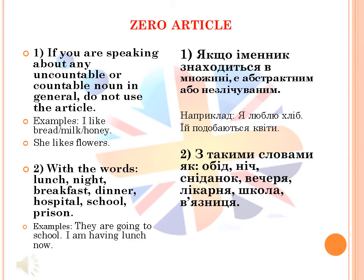Zero article. If you are speaking about any uncountable or countable noun in general, don't use the article. For example: 'I like bread, milk, honey.' 'She likes flowers.'